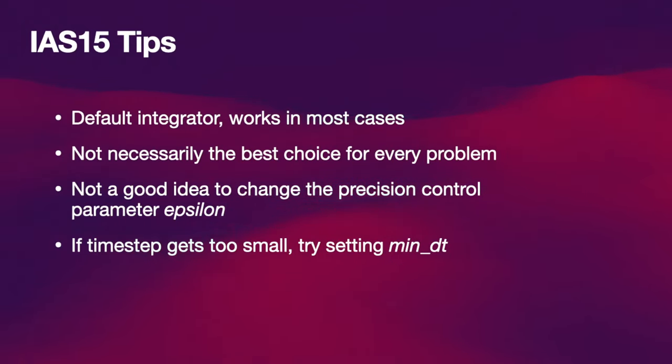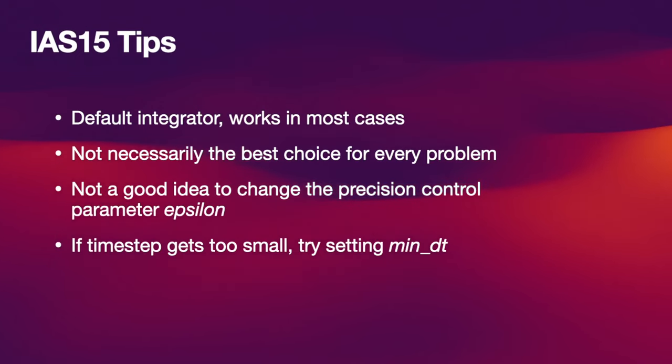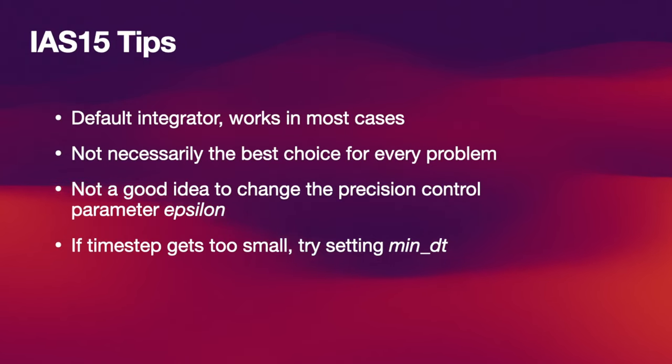One other issue with IAS15 that you might encounter is if the planets have close encounters between them and they're not close to the origin, then the algorithm tries to resolve this encounter as accurately as it should, namely machine precision, but it might not succeed because the encounter is not happening at the origin and relative differences between planets cannot be resolved to 10 to the minus 16 anymore. In that case, IAS15 might stall, and again, this minDT parameter might help you with it.